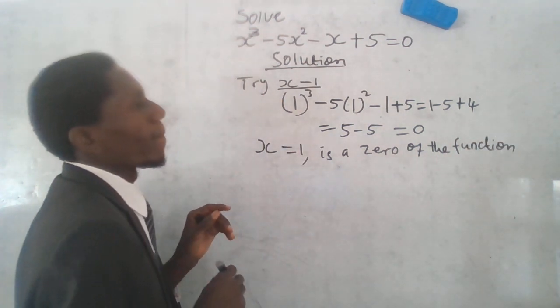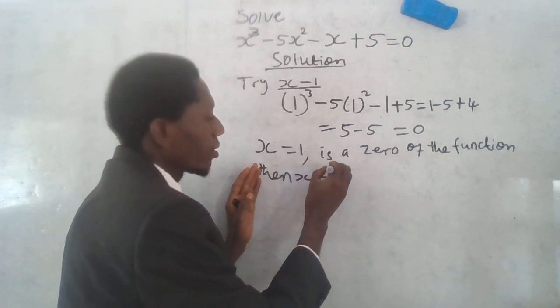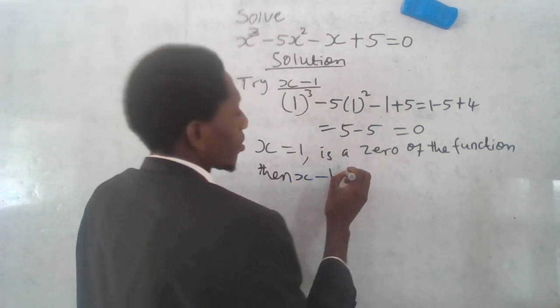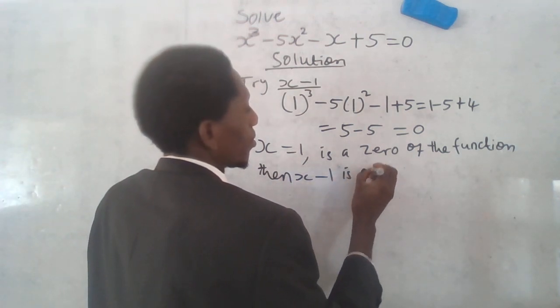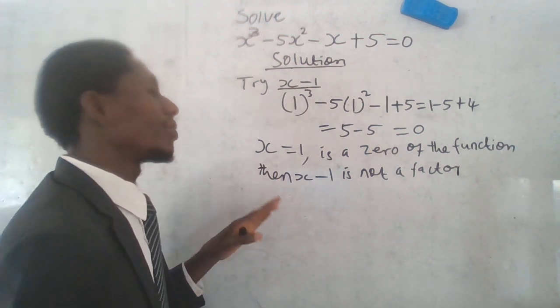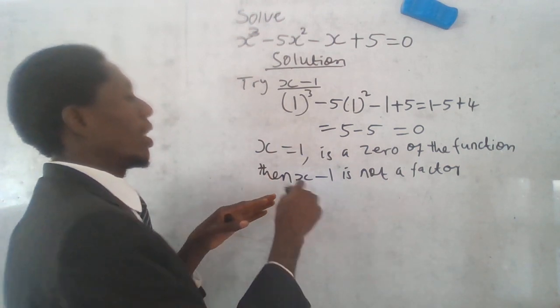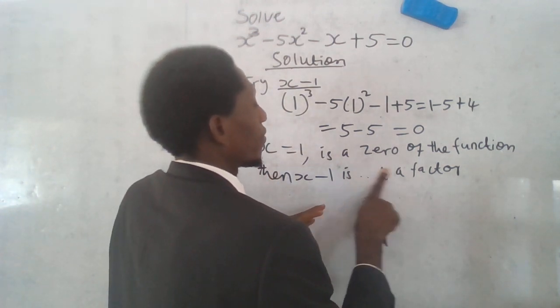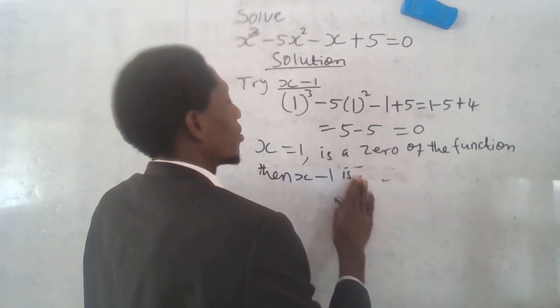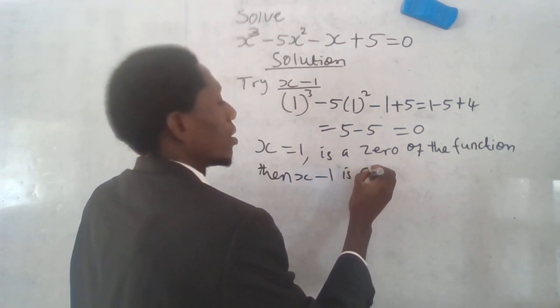Now, we have x minus one. X minus one is not - it's not a factor. Sorry, sorry. X minus one is a factor. Looking at the problem, it's a factor. I think I'm being so fast. It's a factor.